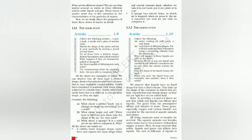Let us discuss more about the solid state of matter. You can do the activity at home. Collect articles like paint, book, needle, and a piece of wooden stick. Sketch the shape of each article in your notebook by moving a pencil around them. Do all these have a definite shape? Yes, they have distinct boundaries and a fixed volume — they all have shape, boundary, and fixed volume.